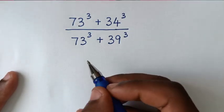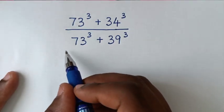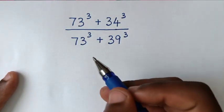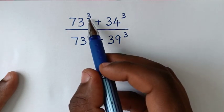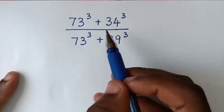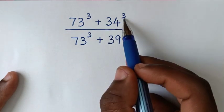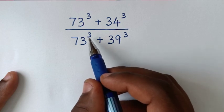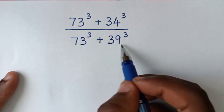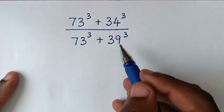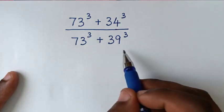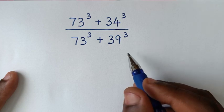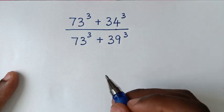Hello, you are welcome to solve this math problem to find the value of 73 power 3 plus 34 power 3 over 73 power 3 plus 39 power 3, to solve this problem without using a calculator. Now in the first step,